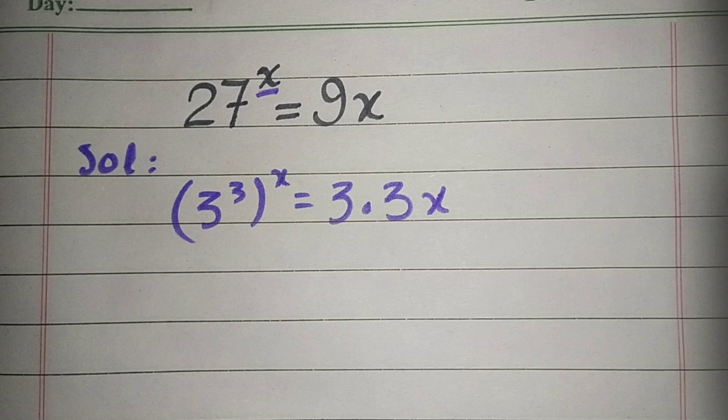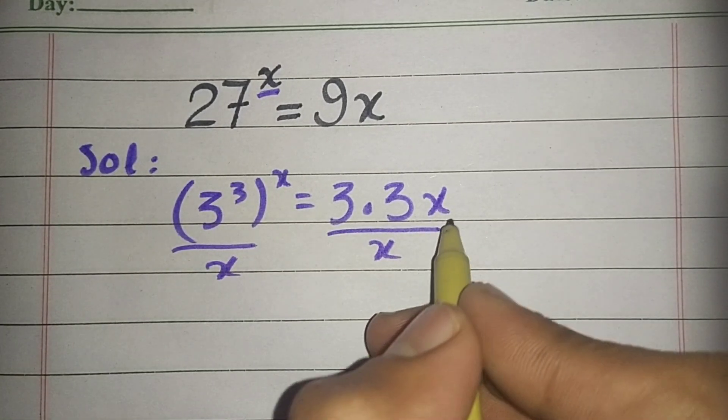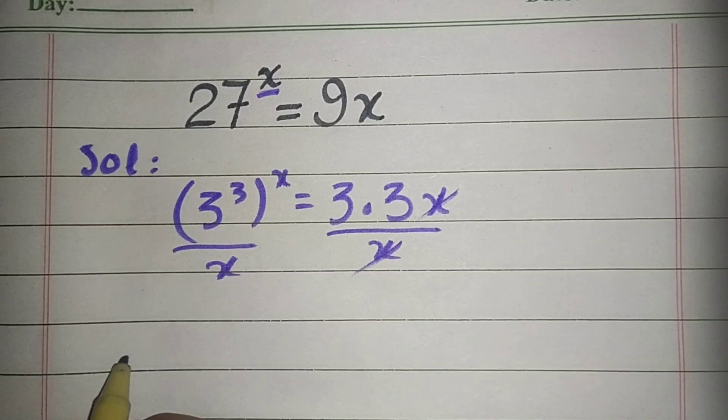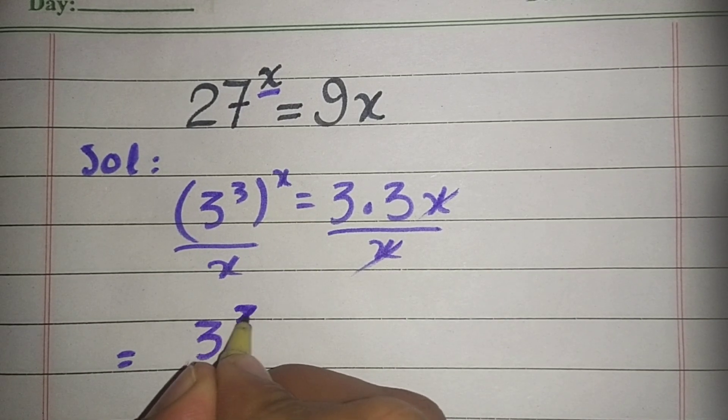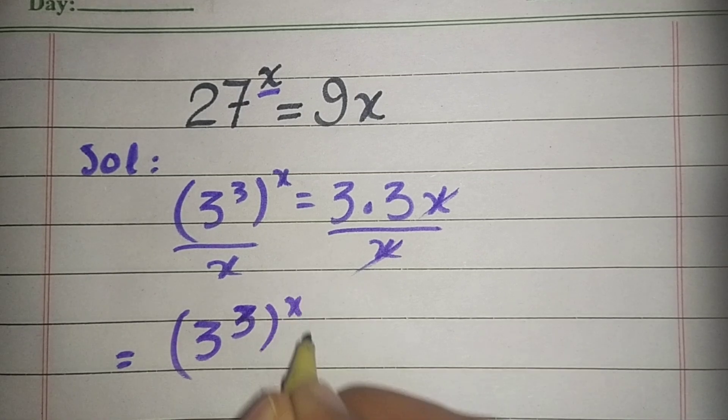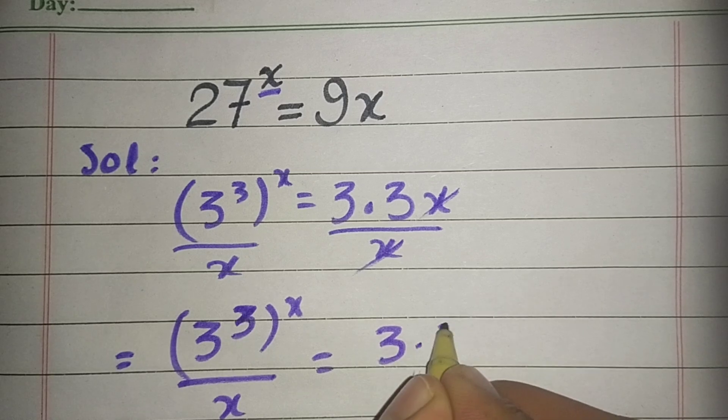Now divide both sides by x. So this equation has become 3 power 3 whole power x divided by x is equal to 3 times 3.